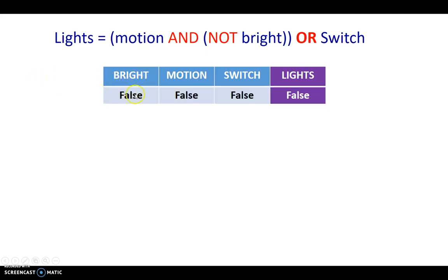For example, consider the case where it's not bright outside. So bright is false, there's no movement, false, and the switch, manual switch, is also false. So in this case, we do not need to turn on the lights, so lights are false.